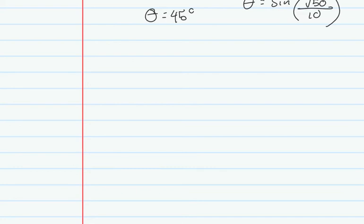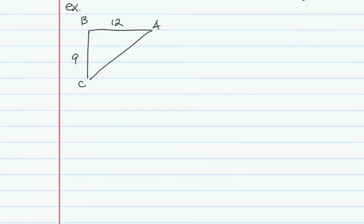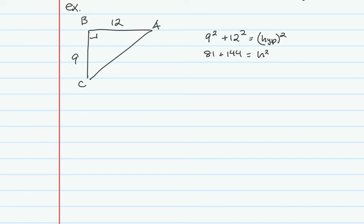Moving on to section 7.7, where we solve for the entire triangle. Looking at one problem with several steps: starting with two side lengths, we can automatically find the third using the Pythagorean theorem. 9 squared plus 12 squared equals the hypotenuse squared.